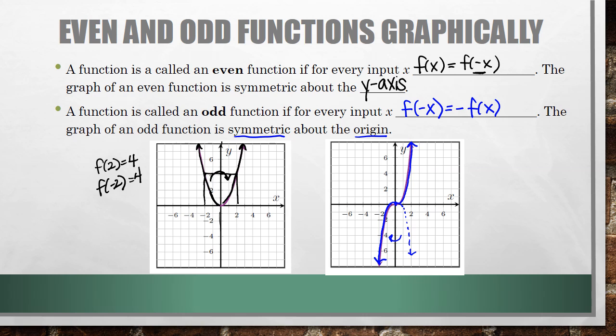So that's how you can check for symmetry. In this example, it is symmetric about the origin, so this is an odd function. And going back to the other one, it was symmetric about the y-axis, so that was an even function.